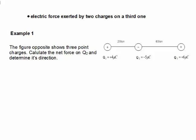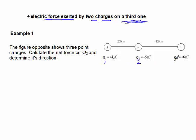Now we are going to calculate the electric force exerted by two charges on a third one. We have three charges, and two are exerting forces on a third one — all on the same line. The figure shows three point charges Q1, Q2, and Q3 placed along the same line.